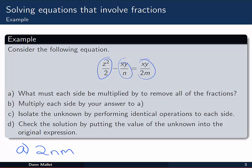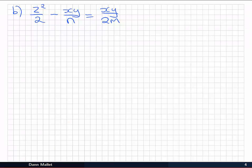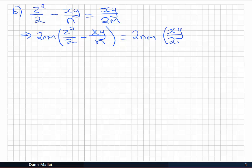Part b asks us to multiply each side of the equation by the answer to a. So we're going to multiply our equation by 2nm. Let's just write it out in full first. On the right hand side, 2nm multiplied by xy over 2m. We can expand things on the left and find that we'll have z squared nm with the 2's cancelling each other. Then, with minus xy over n multiplied by 2nm, we have 2mxy, and here the n's cancel. On the right hand side, the 2's and the m's will cancel, and we're left with nxy.